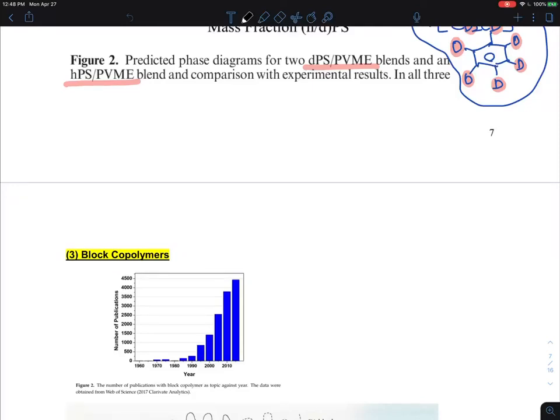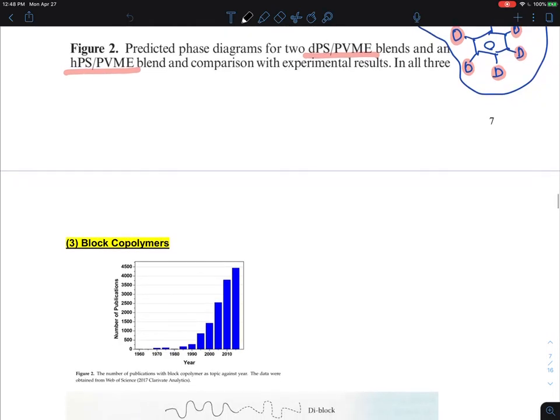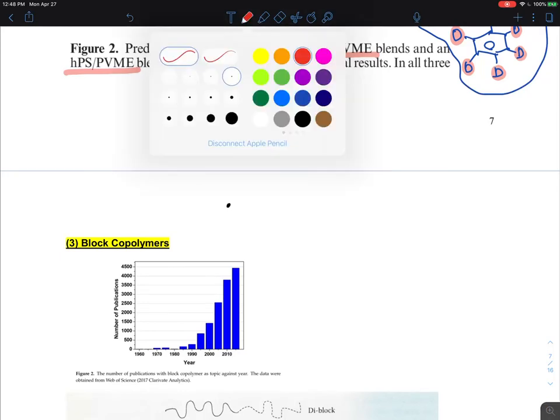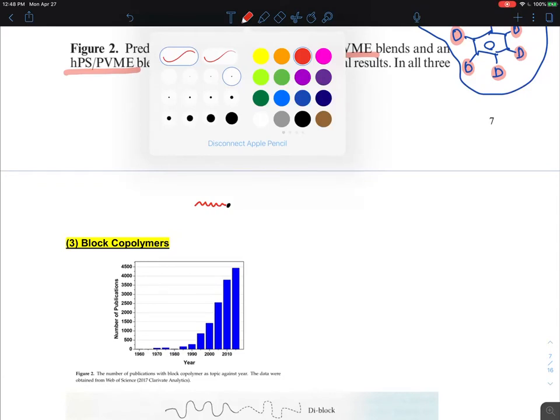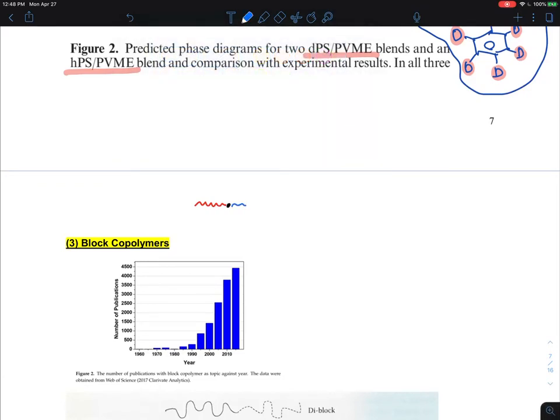This section is about block copolymers. It is a definition and the phase behavior we will talk about. Block copolymers have many different chain architectures. You can think of it as polymer A and polymer B, usually shown in blue and red colors. Red and blue do not like each other, but they are tied together as a single chain.